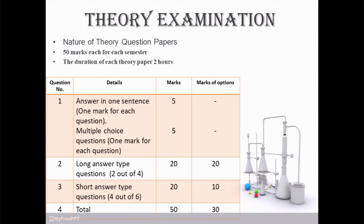Now go to question number 2: long answer type questions. Four questions provided, out of 4 you have to solve any two questions. That means one question having the weightage of 10. Out of 4, you have to solve two questions, so total weightage is 20 marks with options.